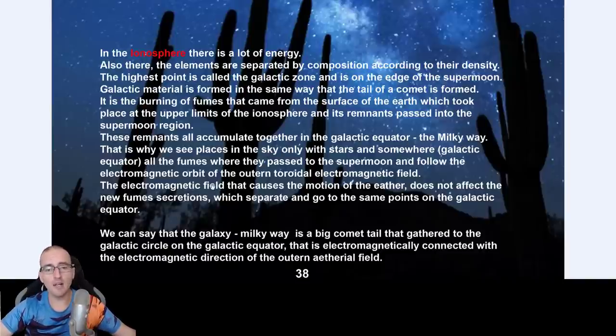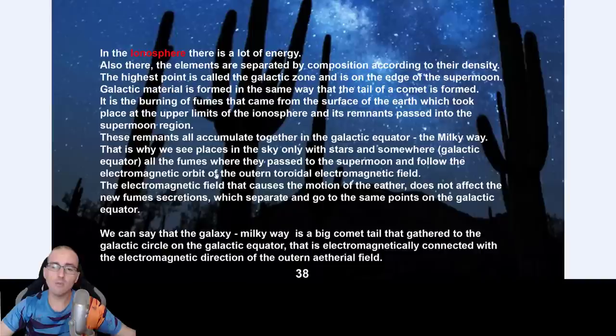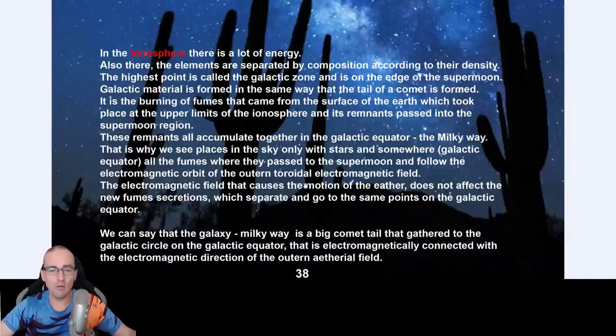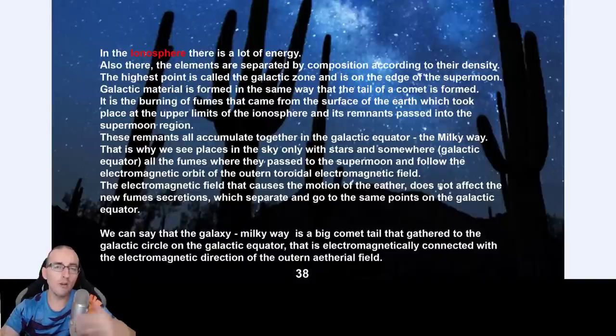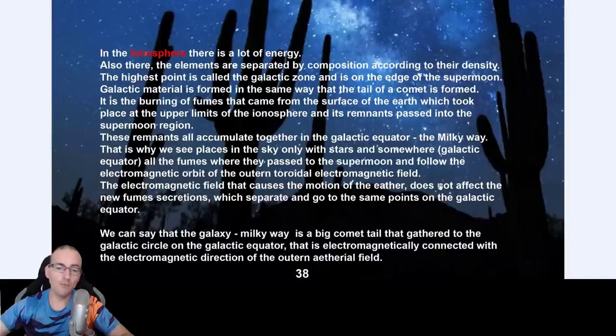That is why we see places in the sky only with stars and somewhere galactic equator, all the fumes where they passed to the supermoon and follow the electromagnetic orbit of the outer toroidal electromagnetic field. Remember, don't skip the video about the layers of space, because that's where you're going to see the boundaries between the supermoon area and the ionosphere and the temperatures, and that's where you're going to place the Milky Way as well.